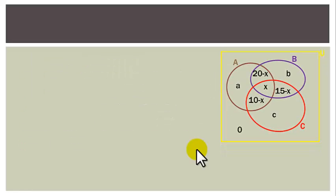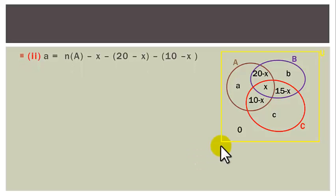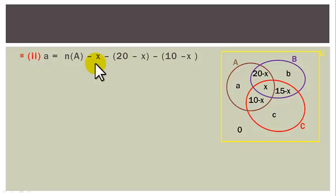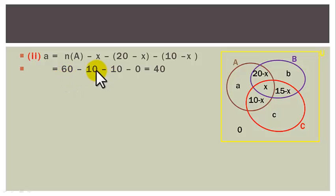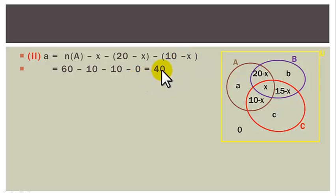Now, small a = |A| − x − (20−x) − (10−x) = 60 − 10 − (20−10) − (10−10) = 60 − 10 − 10 − 0 = 40.